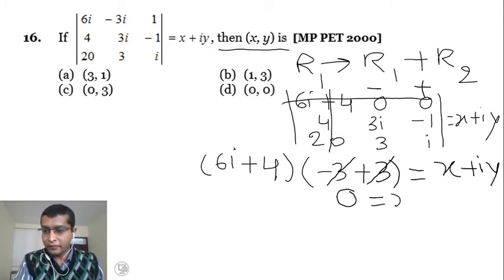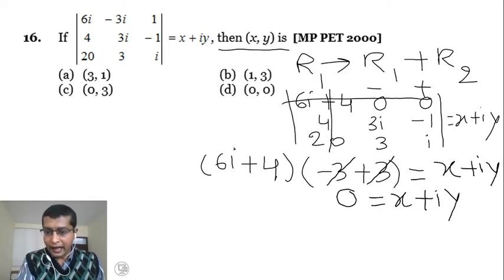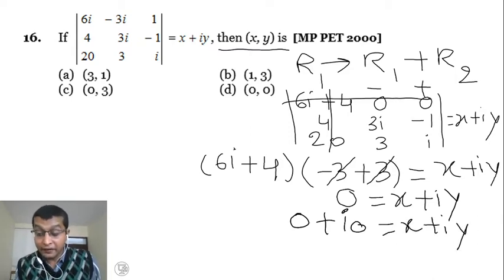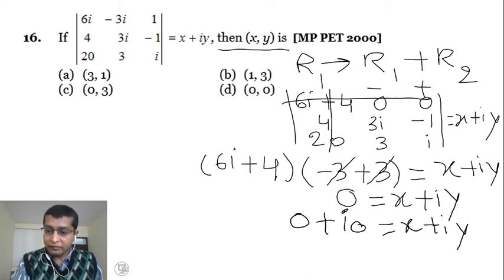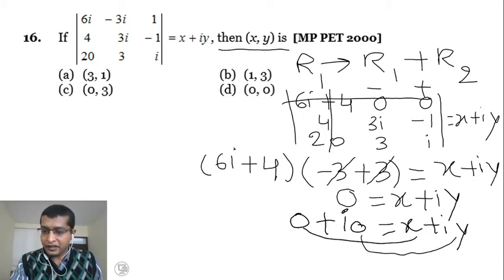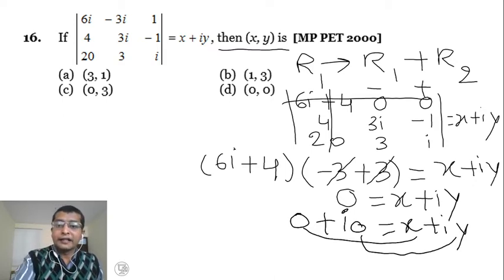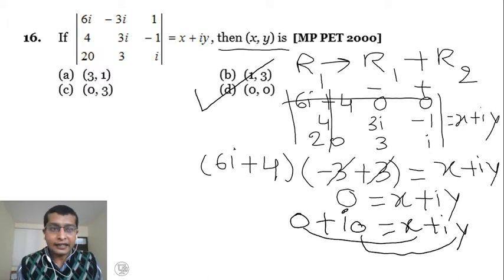We get 0 equal to x plus iy. Writing this as 0 plus i times 0 equal to x plus iy, and equating real part with real part and imaginary part with imaginary part, we get x equal to 0 and y equal to 0. Therefore option D is the right answer.